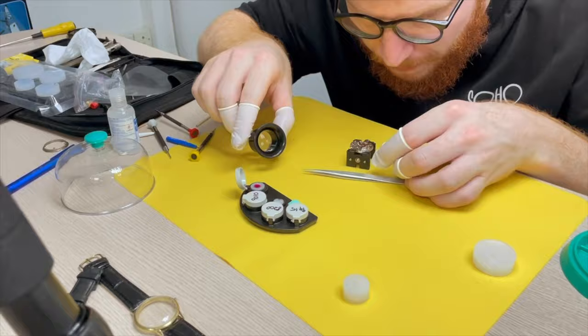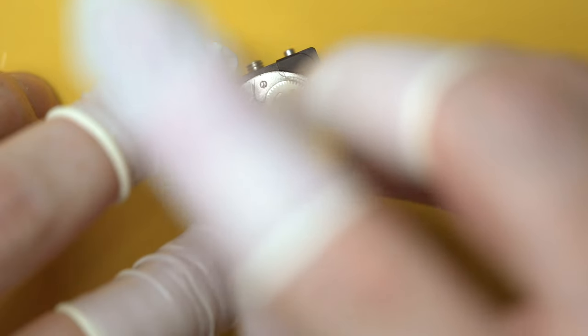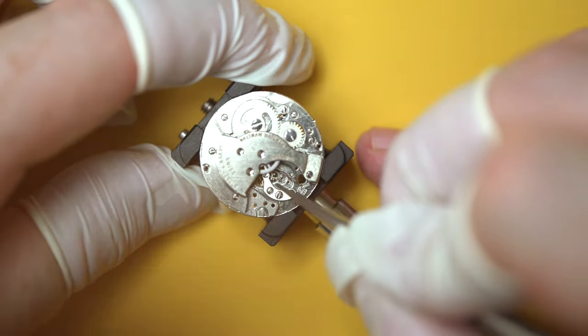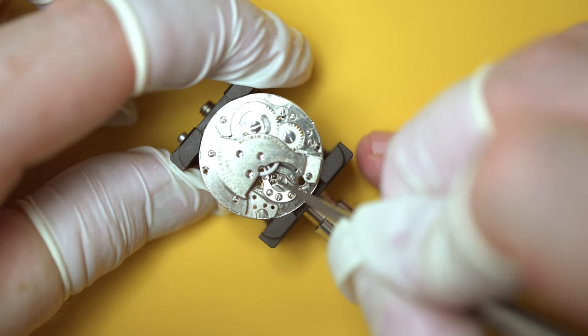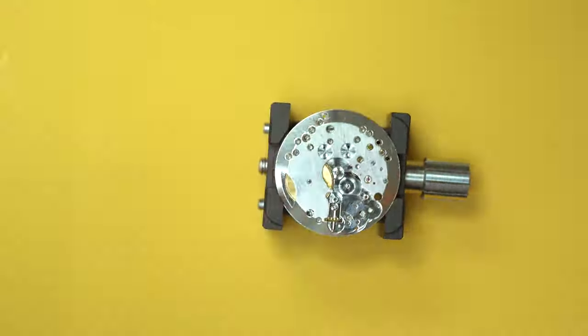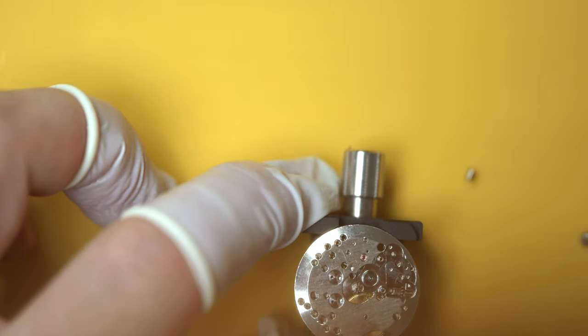But once everything lined up, tighten that one down and we'll just give the pallet fork a little flip just to see if the power goes through to the pallet fork and it all looks okay. So we can flip the watch over and get back to reassembling the keyless works.